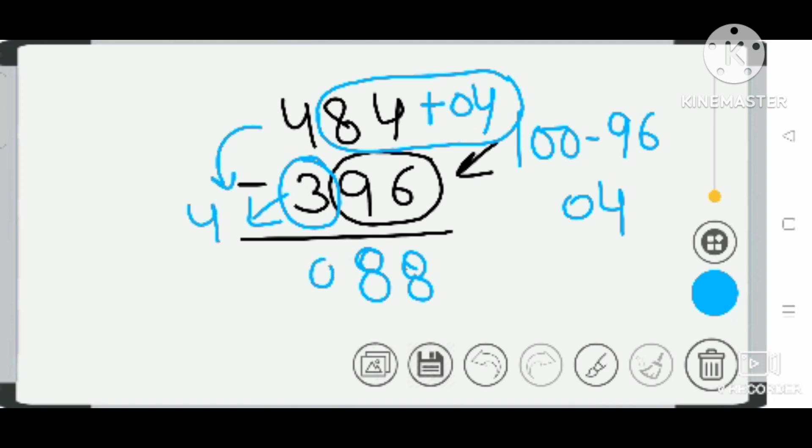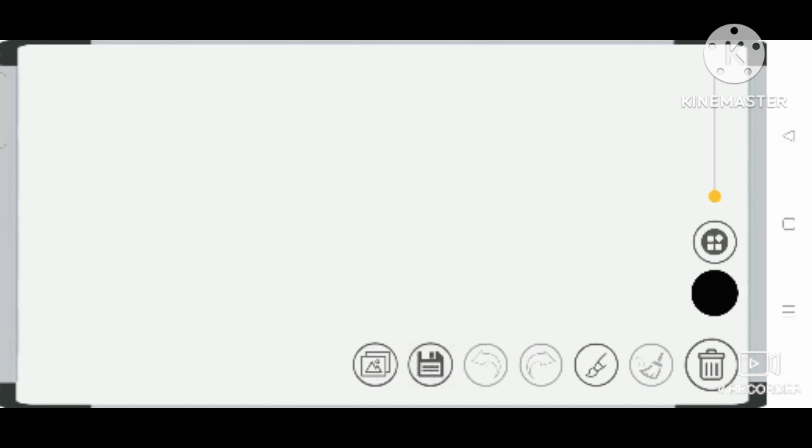Now we are taking one more example of a three-digit number: 249 minus 199.